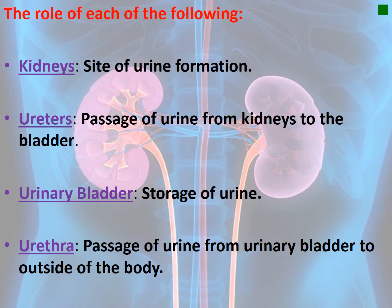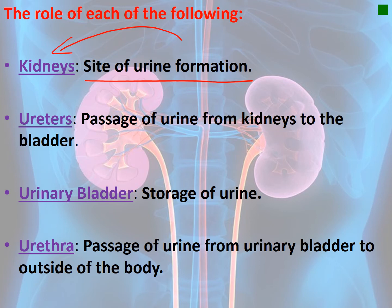The role of each component: the kidneys are the site of urine formation. The ureters allow passage of urine from the kidneys toward the bladder. The urinary bladder is the site of storage of urine. The urethra is the final step where urine passes from the urinary bladder outside the body.